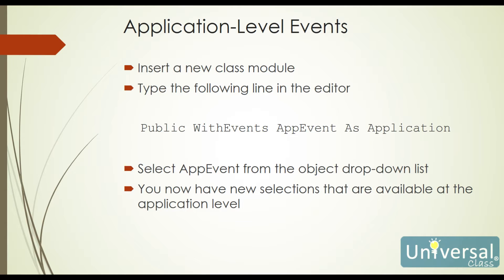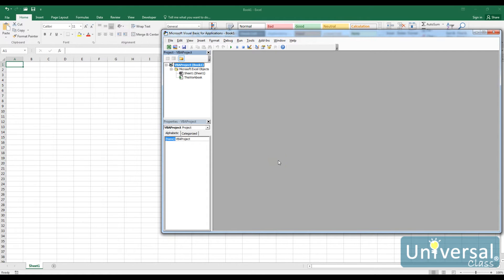At the topmost level, we have application level events. These require inserting a new class module. To do this, you create a new class module and put in the line: public with events app_event as application. Then you'll be able to select that from the object drop-down list just like any other object in your worksheet, and you'll have all the new event selections available for the app.